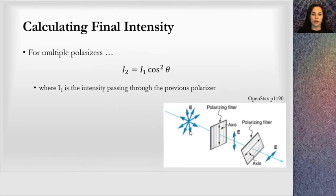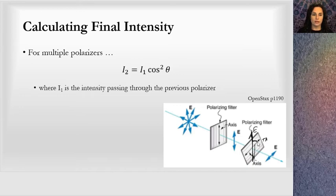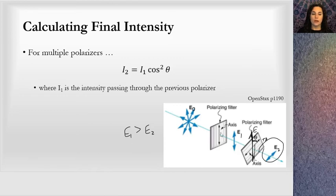Let's apply this law to a couple of qualitative examples. Here I have natural light sent through a polarizing filter, and then through another polarizing filter whose transmission axis is rotated. The electric field E1 after the first filter is larger in magnitude than E2 after the second, and E1 is already only half of the original natural light. So that's how to look at light coming through at some angle.